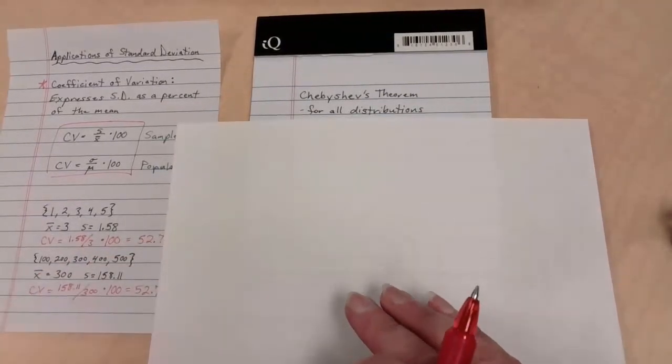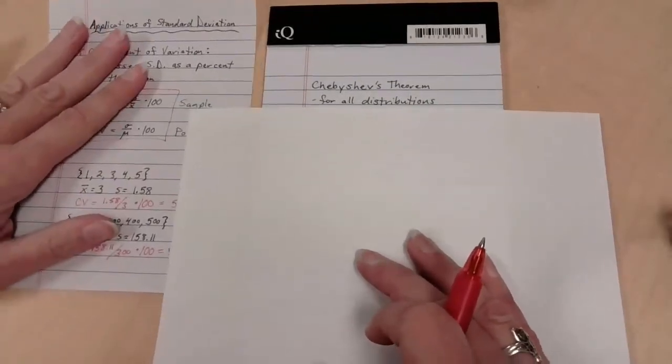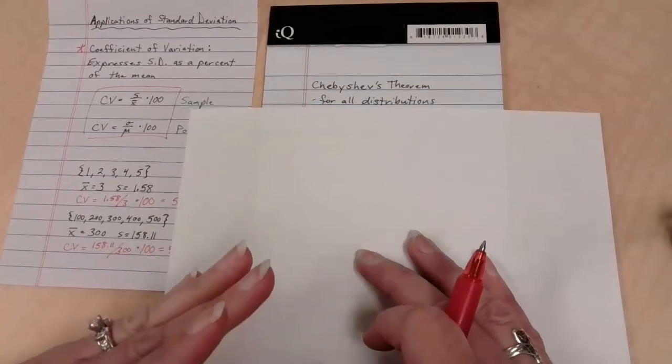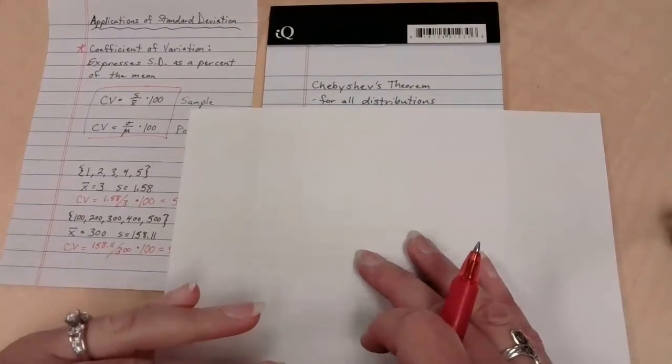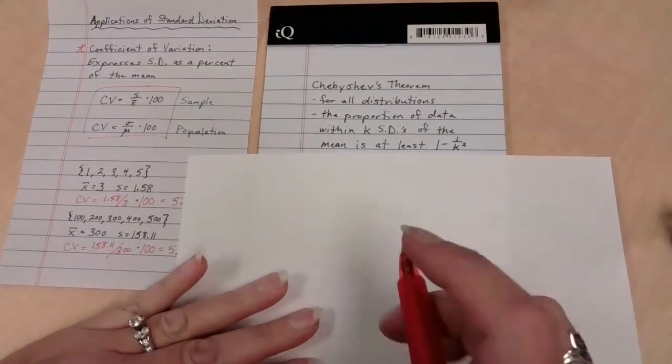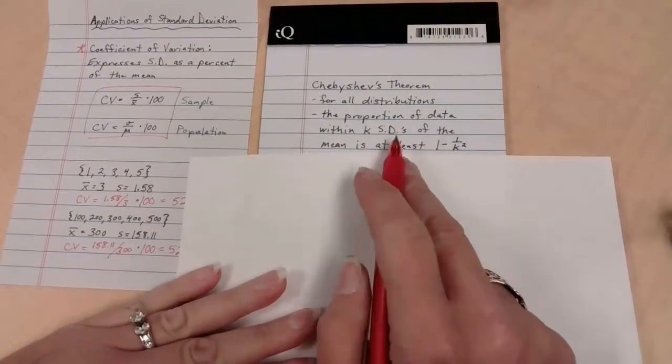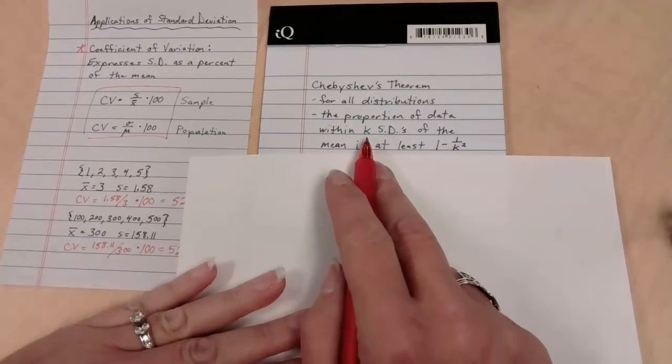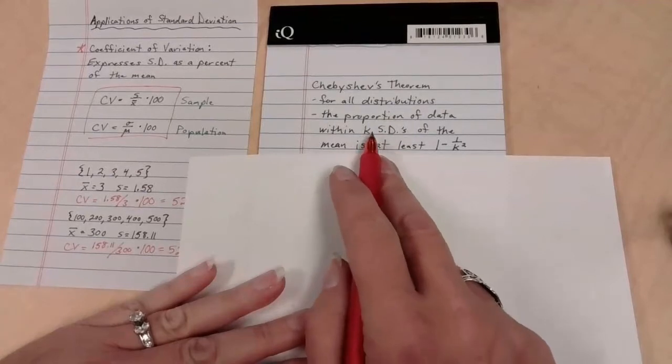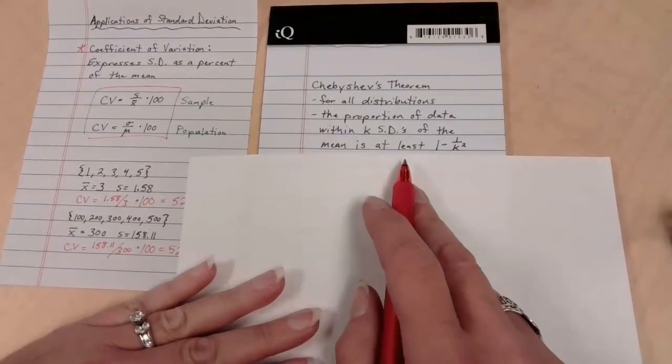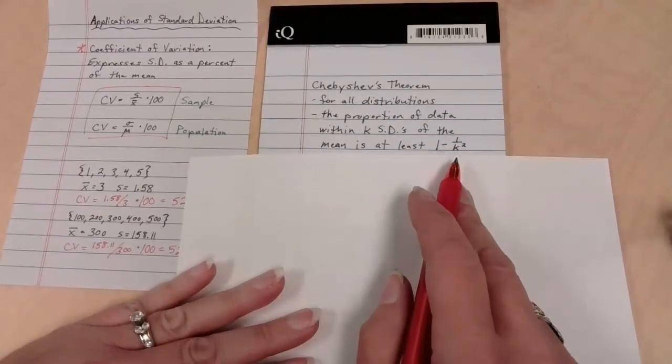For Chebyshev's theorem, this guy has made some significant contributions to the world of statistics, and he's figured out that for all distributions, the following thing is going to be true. The proportion of data within k standard deviations of the mean, k is a variable, so within 1, within 2, within 3 standard deviations of the mean, is at least 1 minus 1 over k squared.